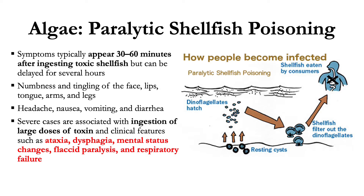In severe cases, depending on how large the dose of toxin ingested, clinical features include ataxia, dysphagia, mental status changes, flaccid paralysis, and respiratory failure. This is how humans are infected by dinoflagellates: the dinoflagellates form resting cysts, which are filtered out by shellfish, and then the shellfish are ingested by humans.